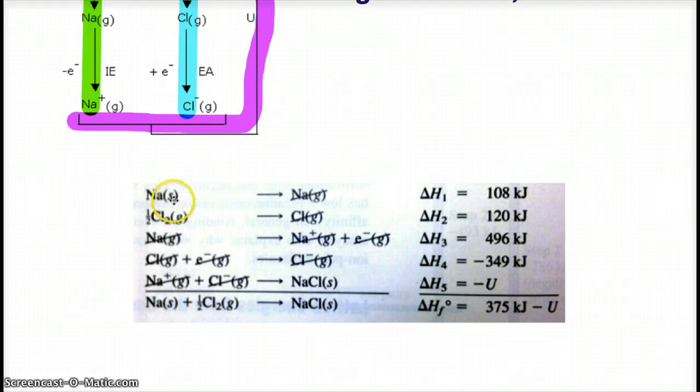So, again, we see sodium solid becoming a gas. And we see the chlorine breaking that bond. And then we see the ionization energy of sodium. Sorry. And then we see the electron affinity of chlorine adding the electron. Now we have our ions.